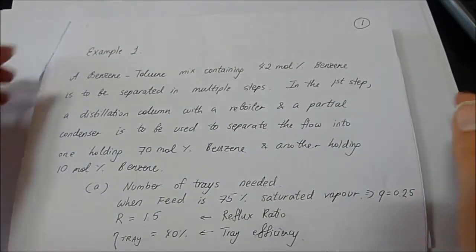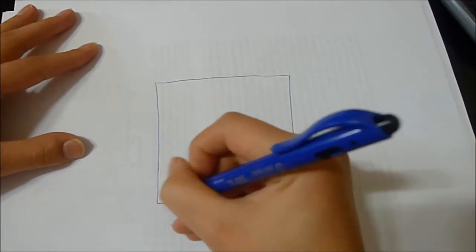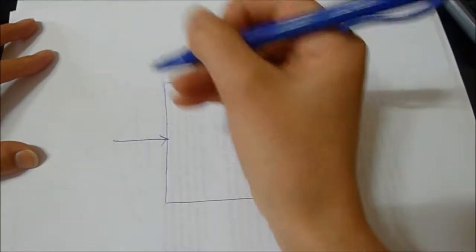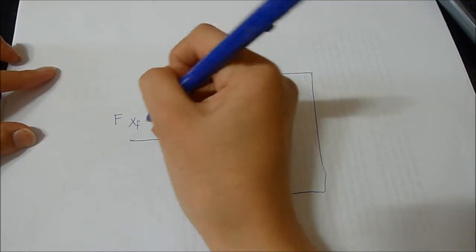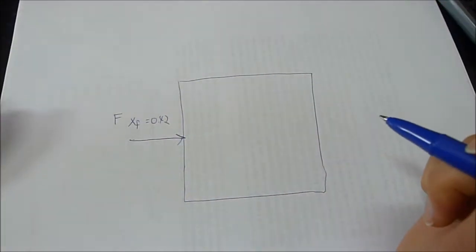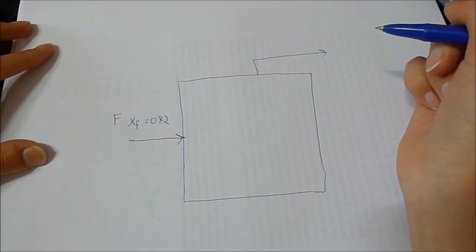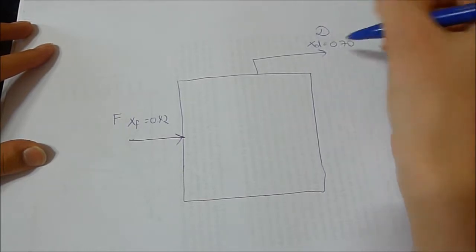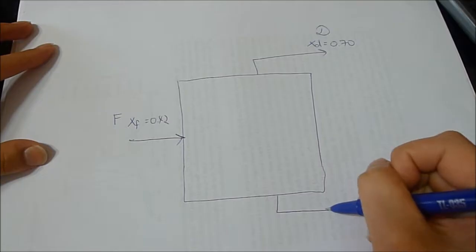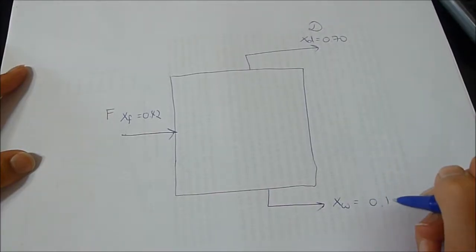So what that means — let's draw the diagram. This is the distillation column. The feed is going in; the feed has 42 mol percent benzene, so Xf equals 0.42, because benzene is the most volatile component. At the top, 70 mol percent benzene is going out, so in the distillate Xd equals 0.70. On the bottoms, Xw equals 0.10.